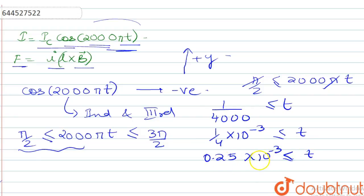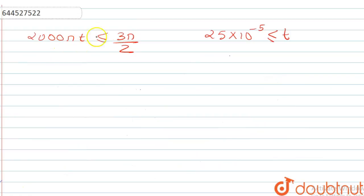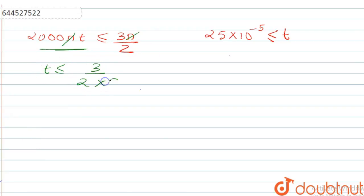So the time should be greater than 25 × 10⁻⁵ seconds. On the other side, from 2000πt ≤ 3π/2, we cancel π on both sides, giving t ≤ 3/(2 × 2000).